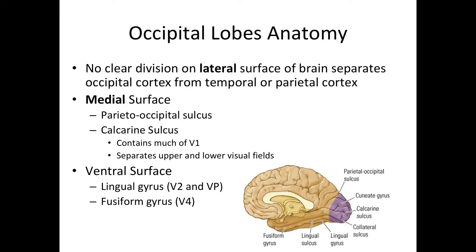The occipital lobe is all the way to the back of the brain. On the lateral side of the brain, there are no clear boundaries that separate the occipital cortex from the temporal and parietal cortex, because the occipital tissue kind of merges in with these other regions.